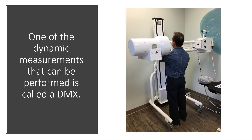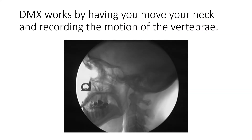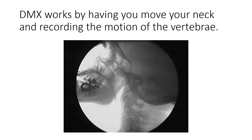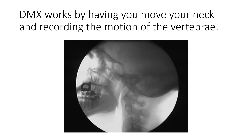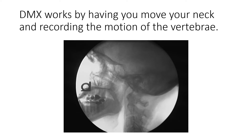One of the ways we can look at dynamic imaging is something called DMX, or digital motion x-ray — that's merely an x-ray while you're moving your neck around. It looks something like this. You can see the patient moving, and the ligaments are supposed to prevent certain movements. So the goal here is to try to see if things move too much.